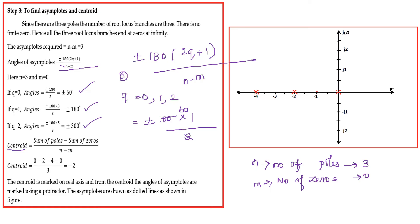The centroid is found using: (sum of poles - sum of zeros) / (n - m). The poles are 0, -2, -4, so sum of poles = -6. There are no zeros. Centroid = (-6 - 0) / 3 = -2. The centroid is marked at -2 on the real axis.